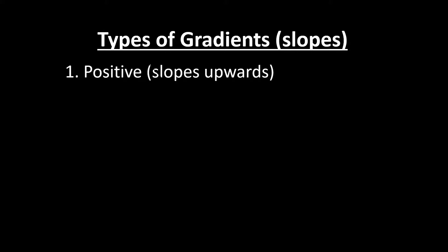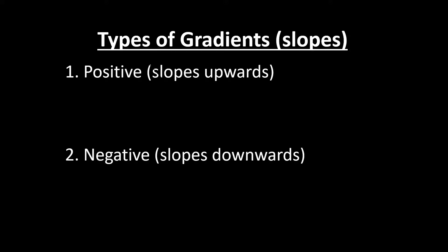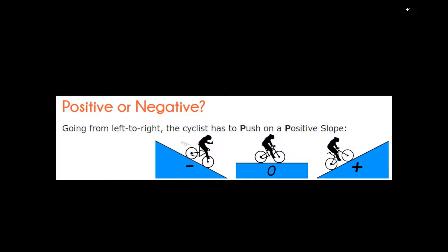The first type is a positive slope, which means it's sloping upwards, and the second one is a negative slope, so it's sloping downwards. In other words, going uphill for positive or downhill for negative. So reading left to right, the cyclist has to push on a positive slope. The first one shown is negative because it's going down, and the horizontal one has a gradient already given as zero. Uphill means the cyclist is pushing, so it's a positive slope.